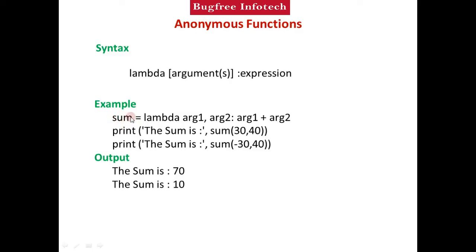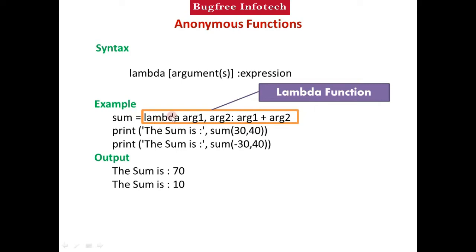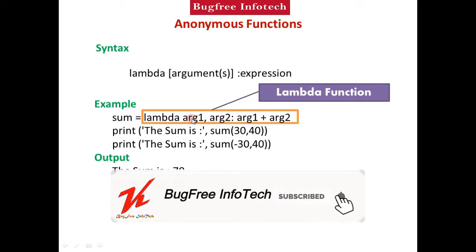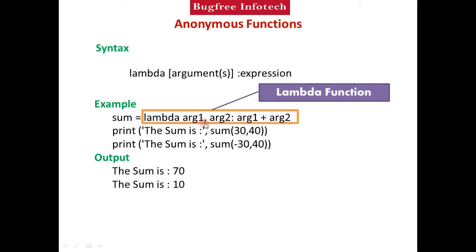We assign the lambda function to a variable called 'sum' using the assignment operator. In the lambda syntax, we use the 'lambda' keyword first, then two arguments: arg1 and arg2. If you want to include more than one argument, separate them with commas. After the colon, we write the expression, which adds the two argument values together.